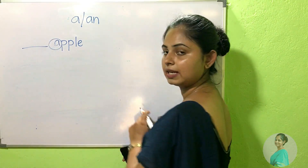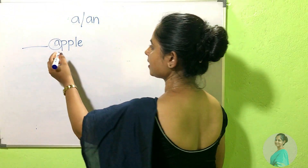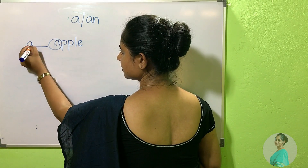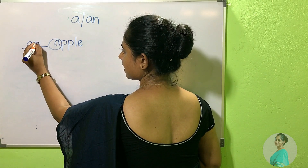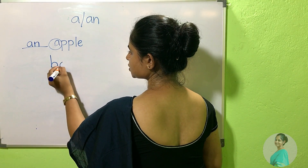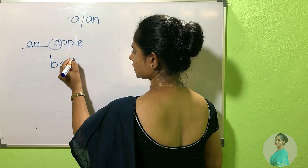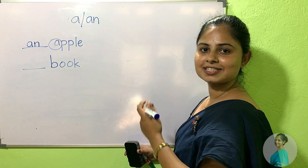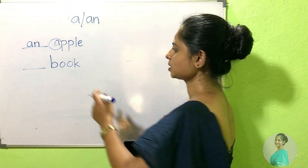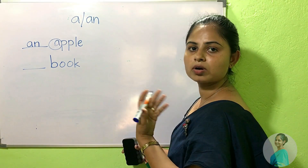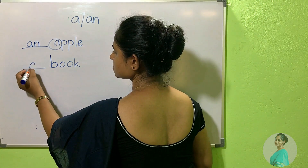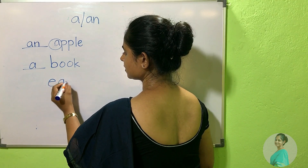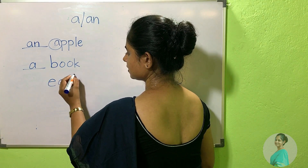A is a vowel letter, and A is a vowel sound. So we can add 'an' here. Next word: book. B is not a vowel sound or a vowel letter, so we can use 'a' here.